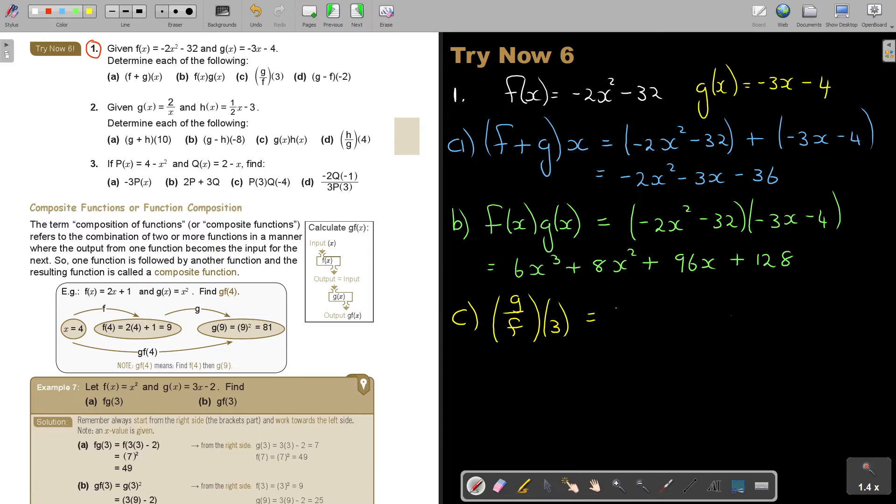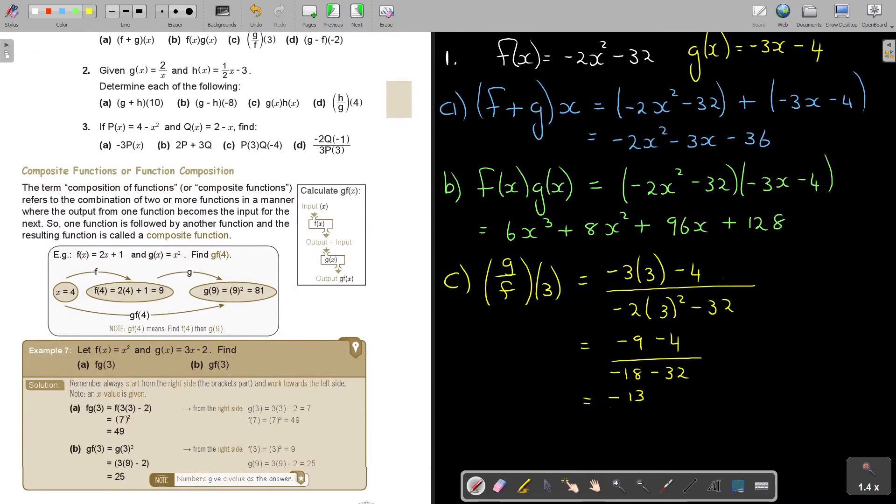So basically g, so it's negative 3 times 3 minus 4. Just make sure which one is standing on top. And then it's negative 2, and it's 3, and it's squared minus 32. This is going to be negative 9 minus 4. And this is going to be 9 times 2, so it's negative 18 minus 32. And that is going to give me negative divided. It's negative 13 over negative 50. But if I simplify negative divided, it's 13 over 50. And that's your final answer.